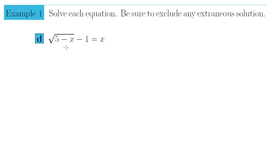Alright, so here's the equation in part D. We have to solve the square root of the quantity 5 minus x minus 1, so the minus 1 is outside of the square root, equals x.